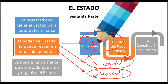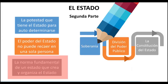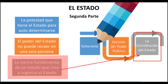Todo esto que hemos mencionado se va a plasmar en una norma suprema, en una norma fundamental: la Constitución. Todas las funciones y todo el reconocimiento de los derechos humanos se encuentran aquí. Por eso hablamos de que es la norma fundamental del Estado. Estos son los principales elementos que conforman al Estado: no solamente territorio, población y gobierno, sino también la soberanía, la división del poder y la constitución del Estado.